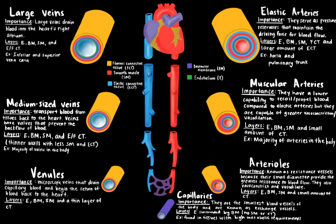Next are capillaries. They are the smallest blood vessels of the body and are known as exchange vessels because their primary function is the exchange of nutrients, waste, and gases in the blood due to their large surface area. Their layers consist of endothelial cells surrounded by a basement membrane — no smooth muscle or connective tissue is present. This means the layer is thin, which facilitates nutrient and waste exchange. The capillary walls also contain pores that permit the passage of certain substances. Capillaries are found extensively in body tissues, especially those with high metabolic requirements like muscles, the brain, liver, and kidneys, which use more oxygen and nutrients.